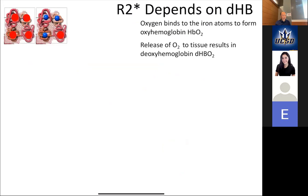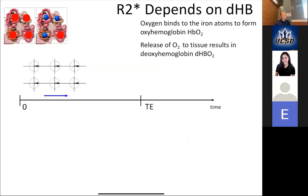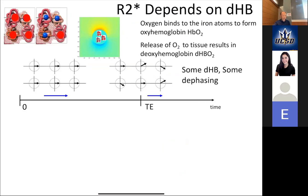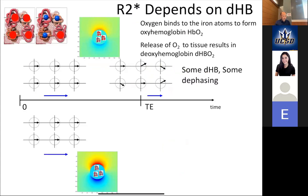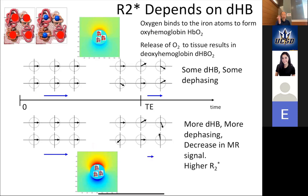The BOLD signal change is the difference between the activated and baseline signals divided by the baseline, and it equals echo time times delta R2*. The bottom line is that to first order, the most important effect is how much deoxyhemoglobin you have in your blood — particularly in the venules. If there's a little deoxyhemoglobin, not much iron is exposed, so there's only a small perturbation of the field and modest dephasing. More deoxyhemoglobin means more field inhomogeneity, more dephasing, and decreased MRI signal.